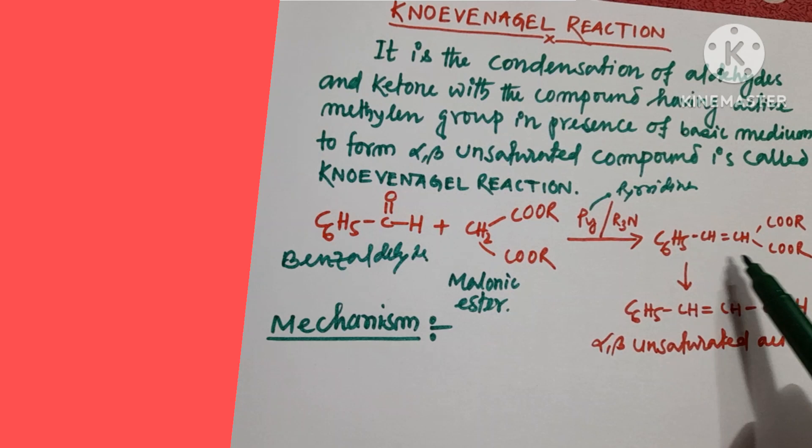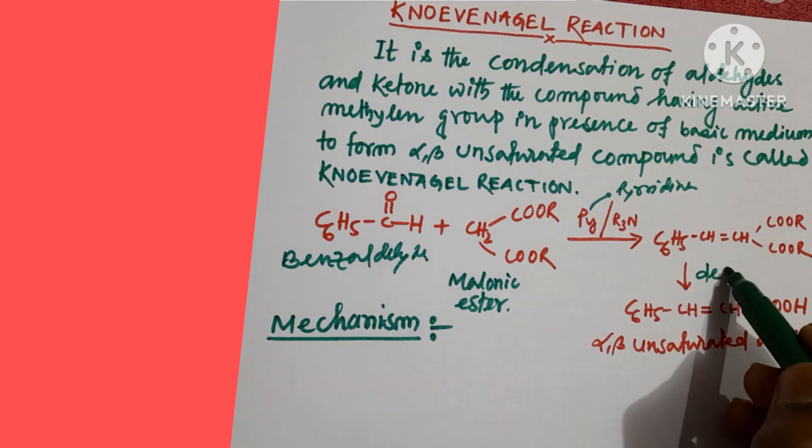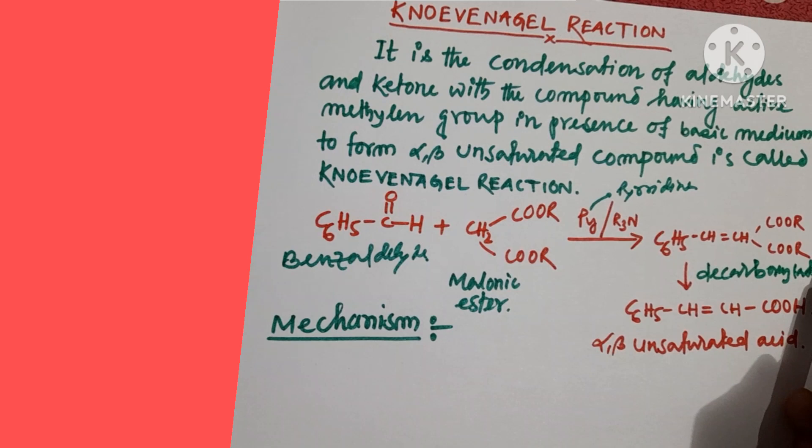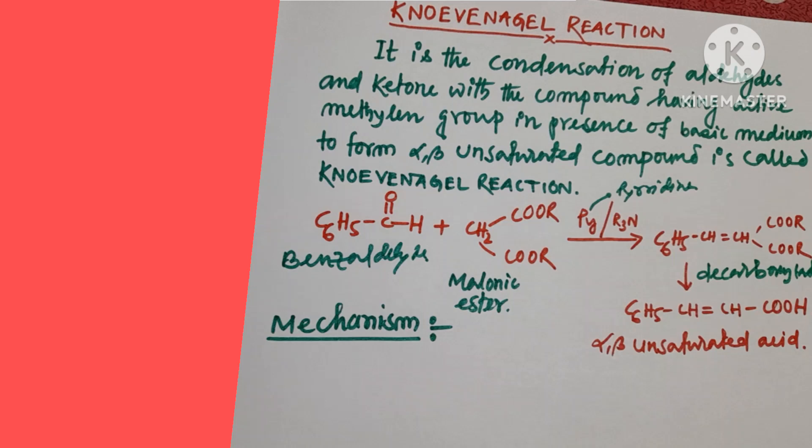Then what we get is an adduct product. After decarboxylation, we get the ultimate alpha-beta unsaturated acid. We will discuss the decarboxylation later. So what is the actual mechanism of the reaction? We will discuss here step by step.